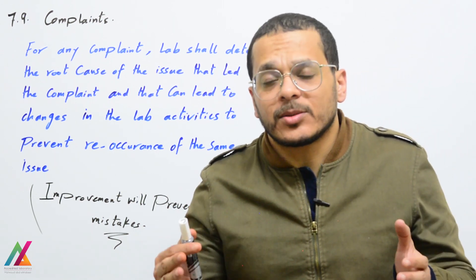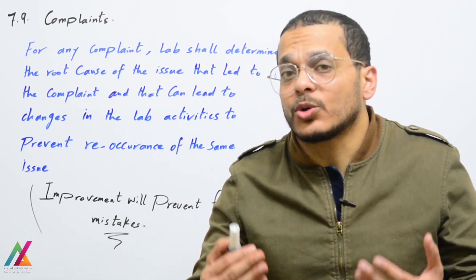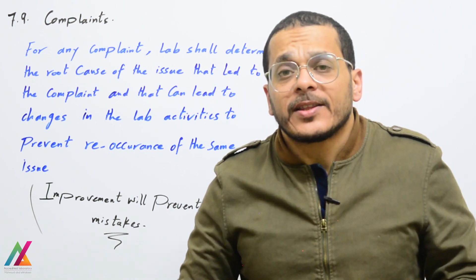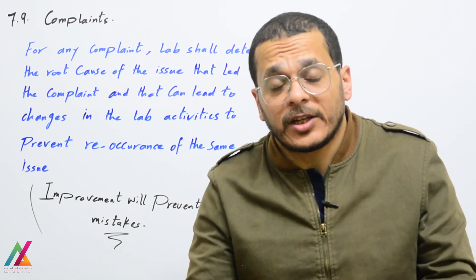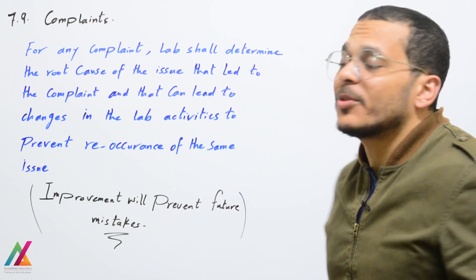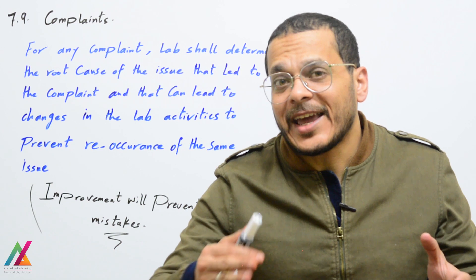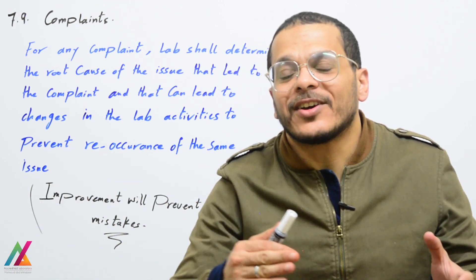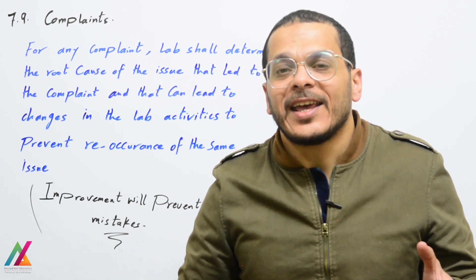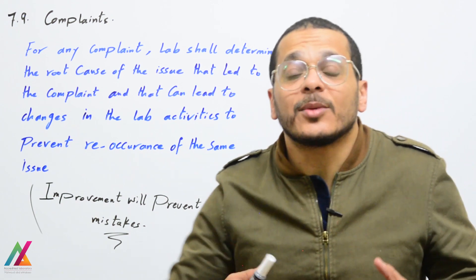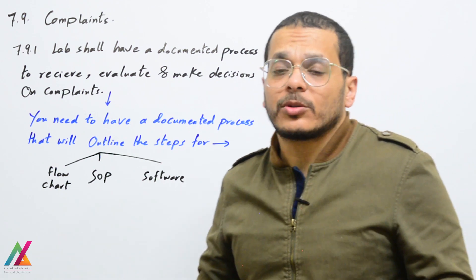As an example: if the customer has a problem with the final report — he cannot understand it or it is not clear — that can be an opportunity for the lab to improve the final report. Improvement will prevent future mistakes. Based on the risk, you will take action to remove the risk, or you will have an opportunity to prevent the issue from happening again, leading to customer satisfaction and improvement in the lab.